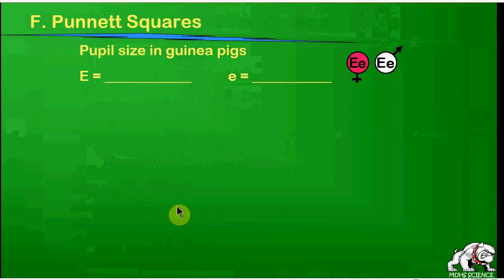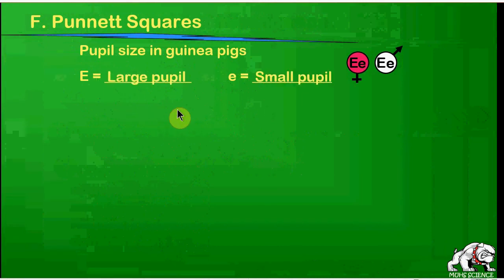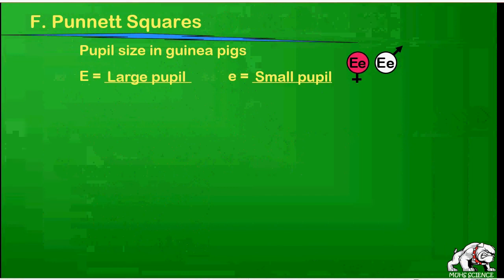We have a tool called Punnett squares to analyze these different types of inheritance. For these notes, we're looking at pupil size in guinea pigs. Since it's about the eye, I've chosen the letter E for the gene. Capital letter E is for large pupil eyes — the pupil being the black part — and lowercase e is for small pupil. In reality these are reversed, as the actual dominant trait is small pupil and the recessive is large pupil, but I switched it for clarity in this video.